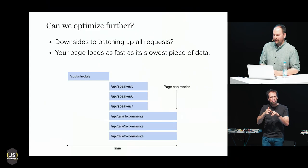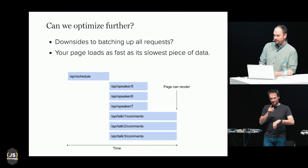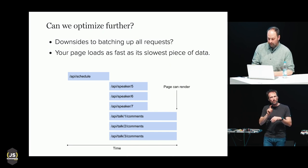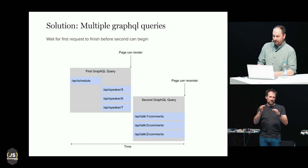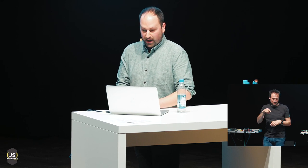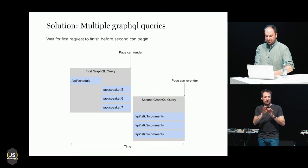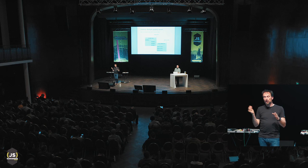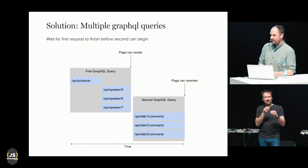But could we optimize GraphQL even more? There are downsides to batching up all your requests — your page will load only as fast as the slowest piece of data. One solution is to make multiple GraphQL queries, which is the most common approach. You split your code into multiple GraphQL queries and execute them as soon as you can, but you still need to write code to coordinate these requests, similar to what we did with REST. You could keep reworking and splitting into more requests, but the more you do that, the more complexity you add to your application.